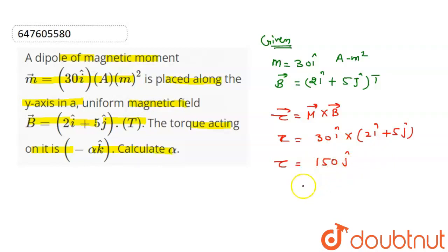And what is the given value of tau? It's minus alpha k cap. Now i cross j equals k cap. So we have 150 k cap equals minus alpha k cap.